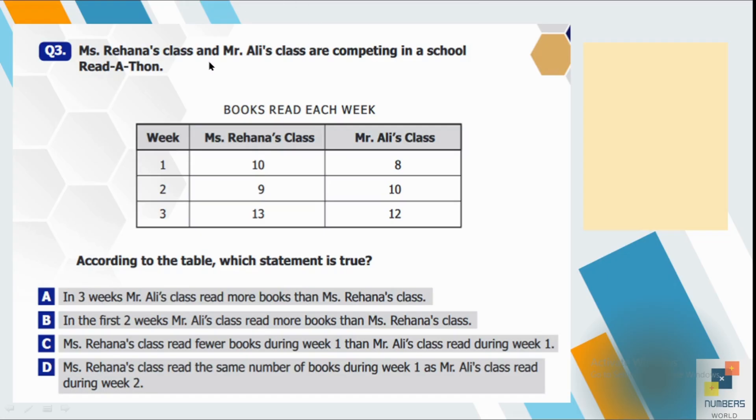Question number 3. Mr. Hanna's class and Mr. Ali's class are competing in a school readathon. According to the table, which statement is true? So here you can see they have given the number of books read by the both classes in week 1, 2 and 3. So option A is in three weeks Mr. Ali's class read more books than Ms. Rihanna's class. So we have to find the total of the both classes.